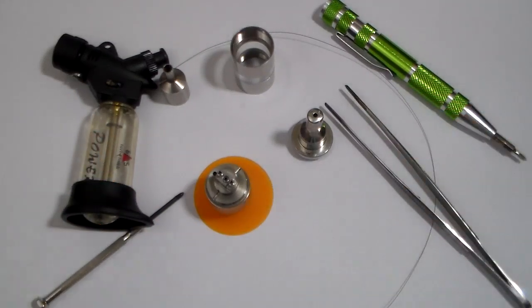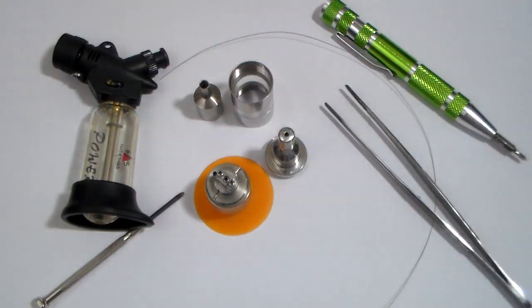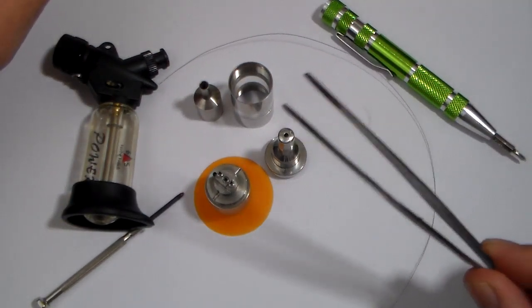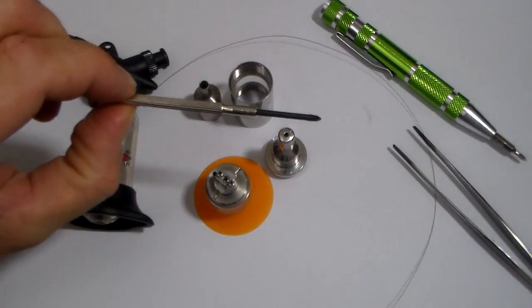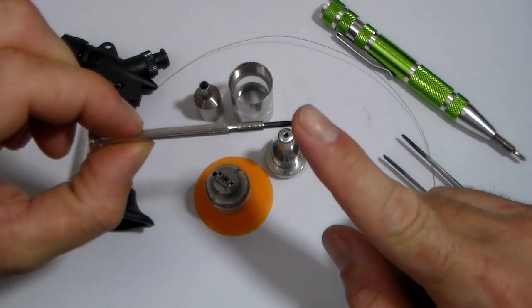Alright guys, so here we are with the Kayfun 3.1. I got it all broke down here. What you're going to need for this build is some tweezers, a micro screwdriver at 2mm or the equivalent in a drill bit.